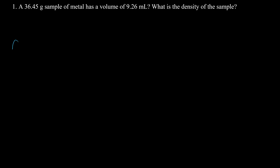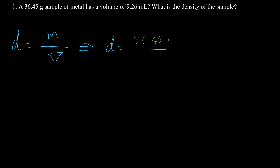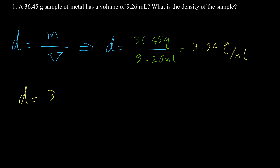Here is the first example: a 36.45 gram sample of metal has a volume of 9.26 milliliters. What is the density? Density is equal to mass over volume. The mass is 36.45 grams and the volume is 9.26 milliliters, so the answer is 3.94 grams per milliliter.